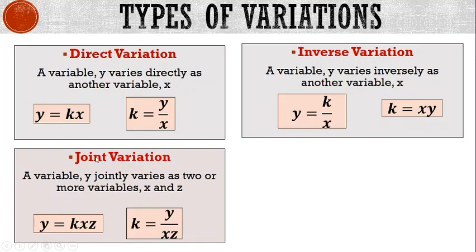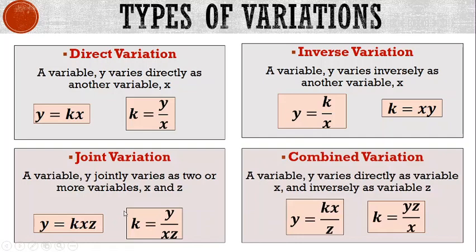The third type of variation is joint variation. In this case, a variable y jointly varies as two or more variables, and we write the equation as y equals kxz. Combined variation is when we combine direct and inverse variation in the same question. If a variable y varies directly as x and inversely as z, we write the equation as y equals kx divided by z.